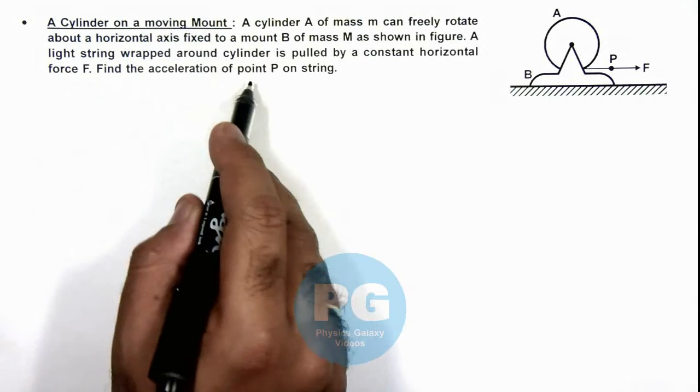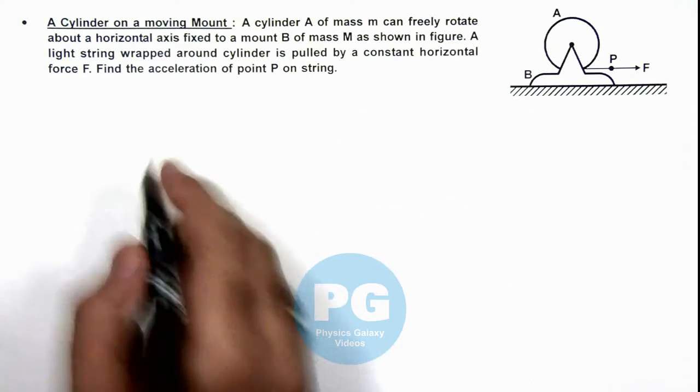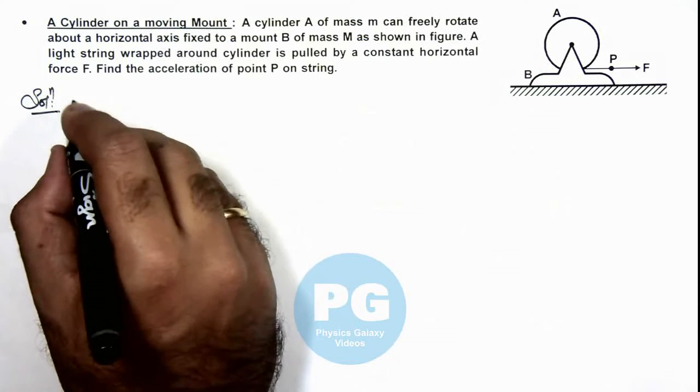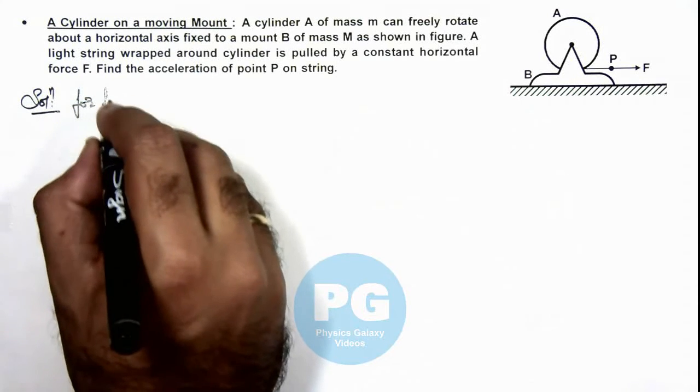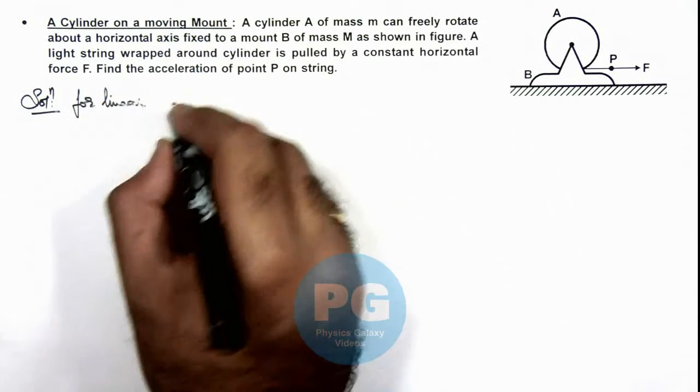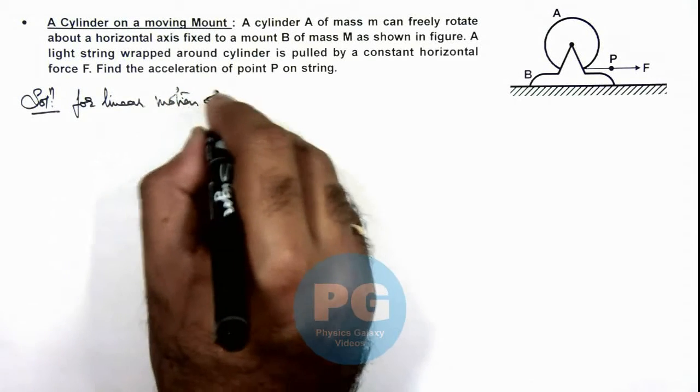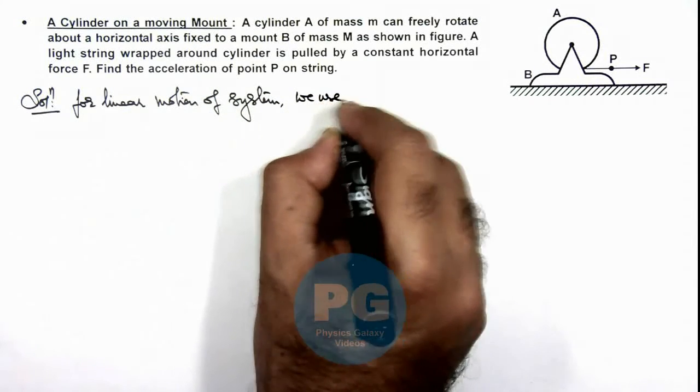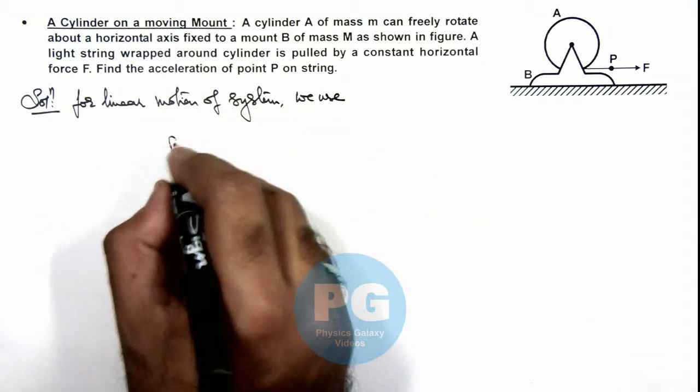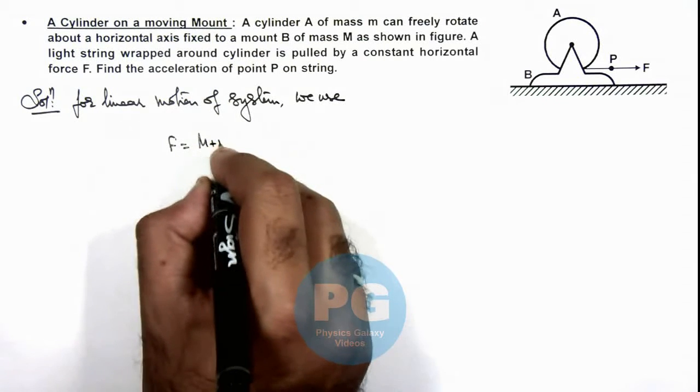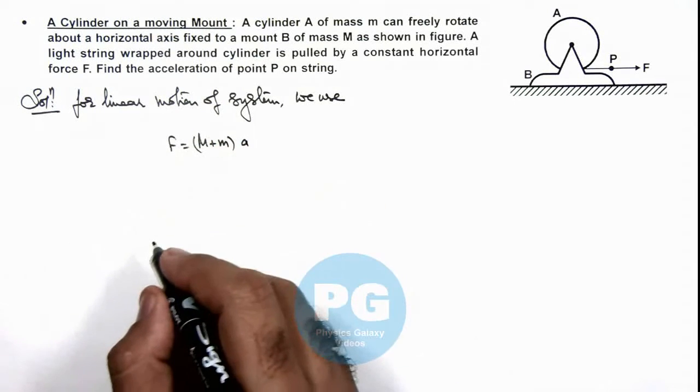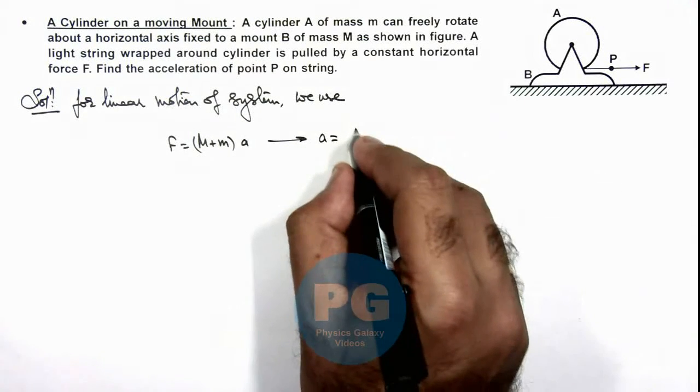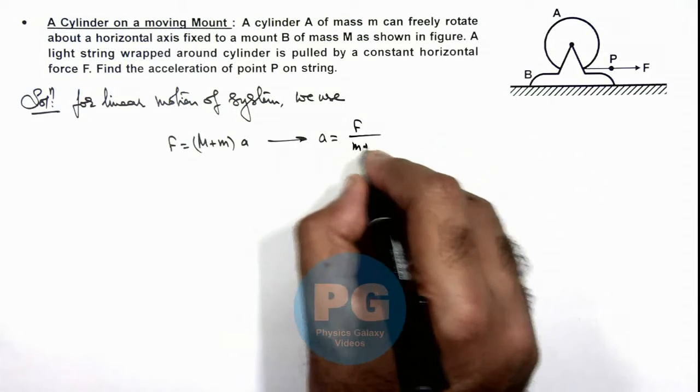We are required to find the acceleration of point P on string. Here in solution, for linear motion, or we can write translational motion of system, we use in this situation F equals (M + m) multiplied by a. This gives us the value of acceleration, linear acceleration of system, as F/(M + m).